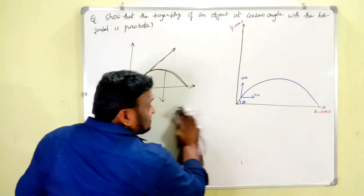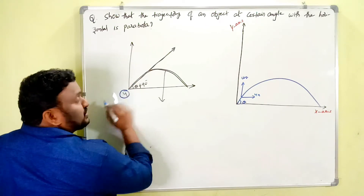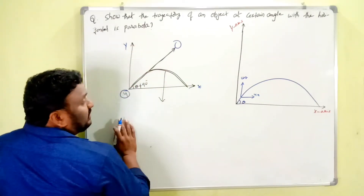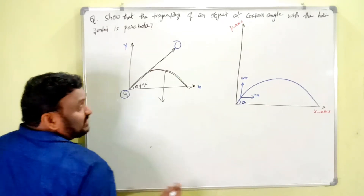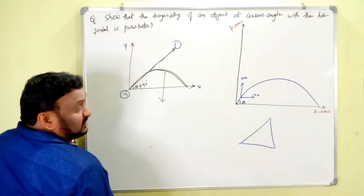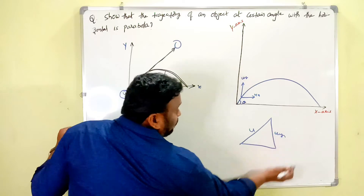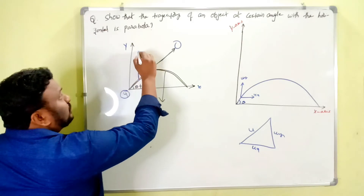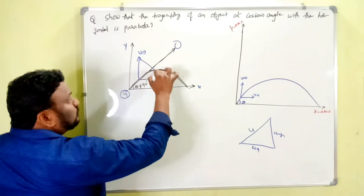At the point of projection, the initial velocity is u. When the body moves in the xy plane, the velocity is divided into two components. According to the resolution of vectors, this initial velocity u has a vertical component uy and a horizontal component ux.